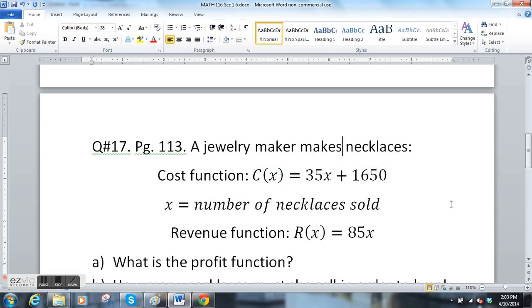Her cost function looks like this: C(x) = 35x + 1650, and x is the number of necklaces sold. I'm assuming she's making pretty nice necklaces. The revenue function is R(x) = 85x. I added a couple sections—this part a is not in your book, this is my own bonus question.